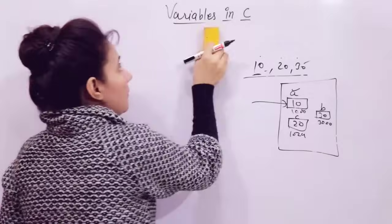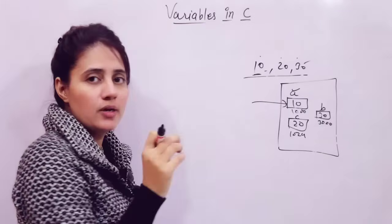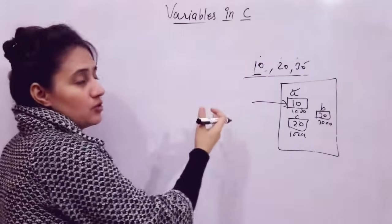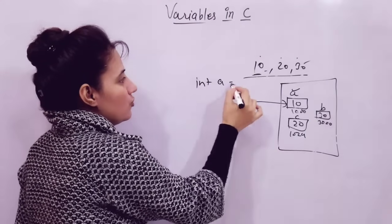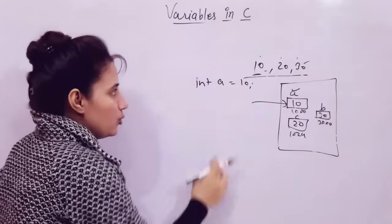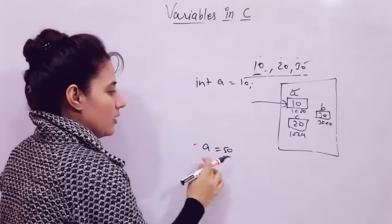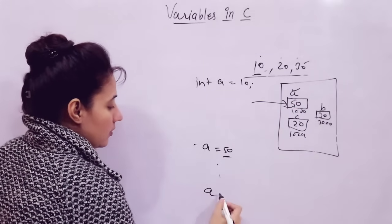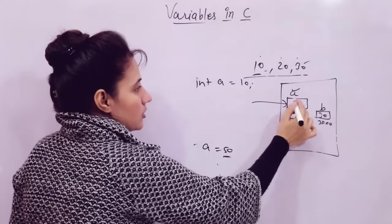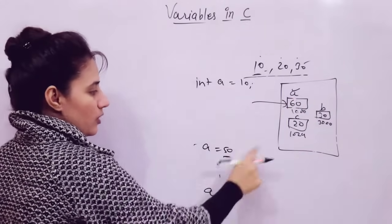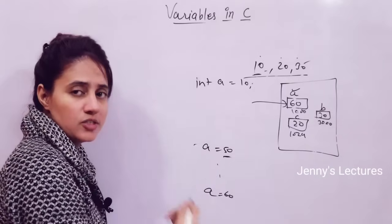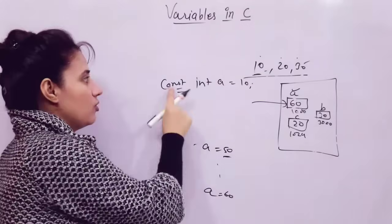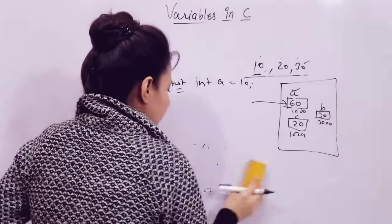As the name suggests, 'variable' means the value of that variable may be changed during the execution of a program — throughout the program. Like if A is equal to 10 here, anywhere in the program I can change A to 50 and that value would be updated. If after that I write A equal to 60, then A becomes 60. But if you define it with the 'const' keyword, then you cannot change the value — it becomes a constant variable.